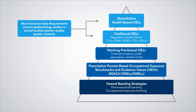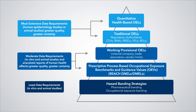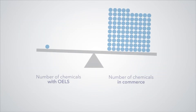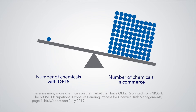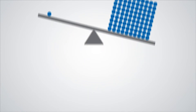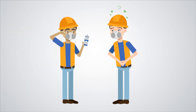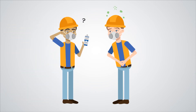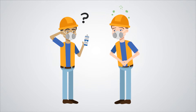OELs have extensive data requirements and are often authoritative or regulatory, while OEBs have fewer data requirements. However, the number of chemical solutions and products on the market far exceed available OELs. Although not an OEL substitute, Occupational Exposure Banding provides a framework to help protect workers' health during a chemical exposure, even if you lack certain information on the substance.